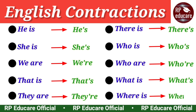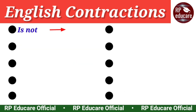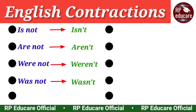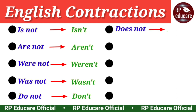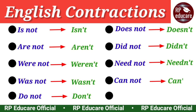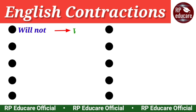Where is - where's. Is not - isn't. Are not - aren't. Were not - weren't. Was not - wasn't. Do not - don't. Does not - doesn't. Did not - didn't. Need not - needn't. Cannot - can't. Could not - couldn't. Will not - won't. Would not - wouldn't.